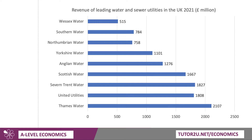Here are the revenues of the water and sewer utilities — the regional ones. The biggest by some distance is Thames Water at £2.1 billion, based in Reading and Berkshire, providing drinking water and wastewater treatment for well over 15 million customers, all the way down to Wessex Water with a revenue of just over half a billion.